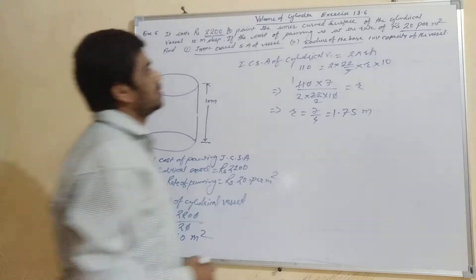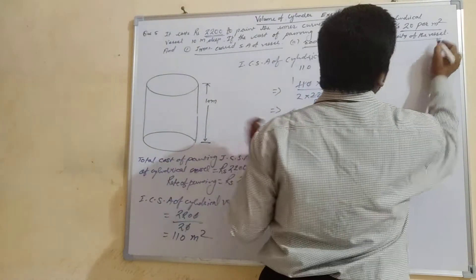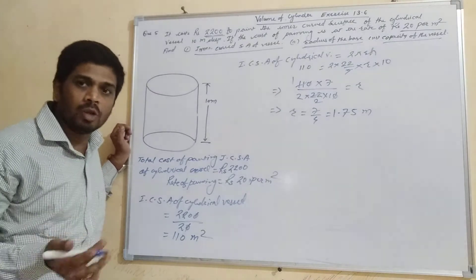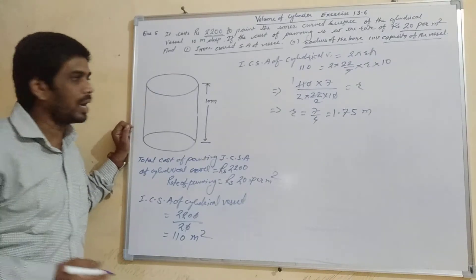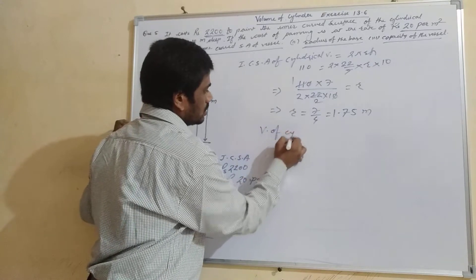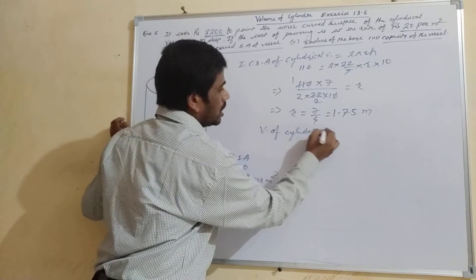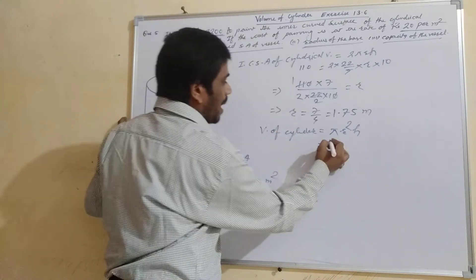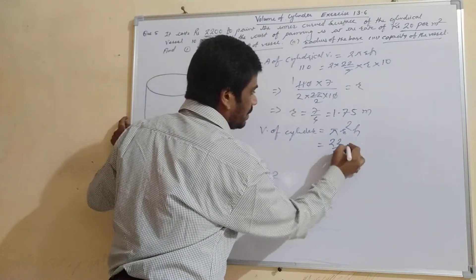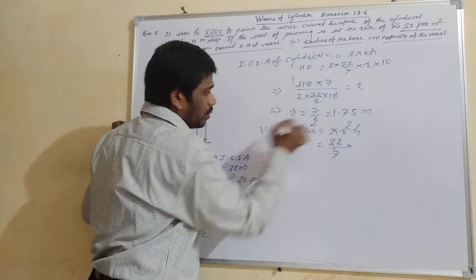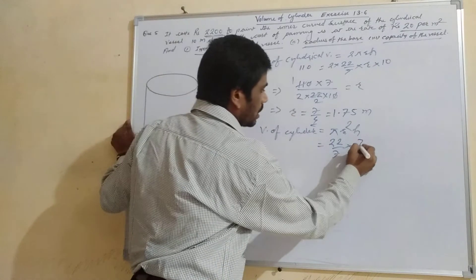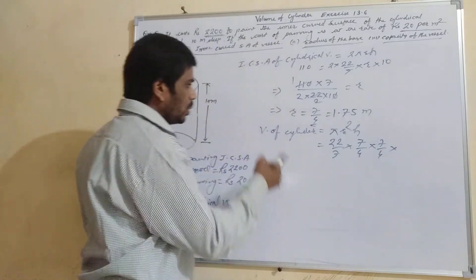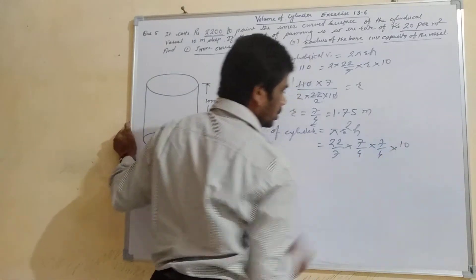Now we have to find the third part: the capacity of the vessel. For finding capacity, we will first find the volume of the cylinder. Volume of a cylinder equals πR²H. Here pi is 22/7, R is 7/4 (we put this value because it will be easy to cancel), so R² = (7/4) × (7/4), and H is given as 10.